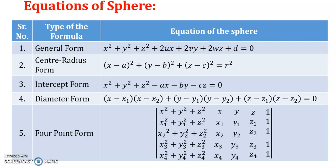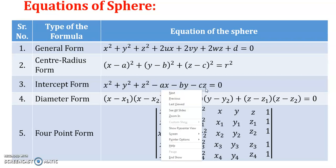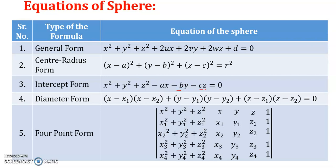The third form of the equation of a sphere is the intercept form. It is given by x² + y² + z² − ax − by − cz = 0, where a, b, c are the x-intercept, y-intercept, and z-intercept respectively.